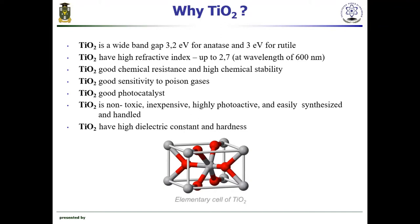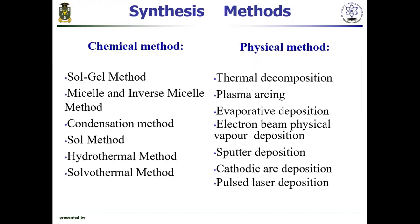Titanium dioxide can be obtained by many methods: chemical methods such as sol-gel method, solvothermal, and hydrothermal methods, and physical methods including thermal decomposition, sputtering deposition, cathodic deposition, and pulsed laser deposition.